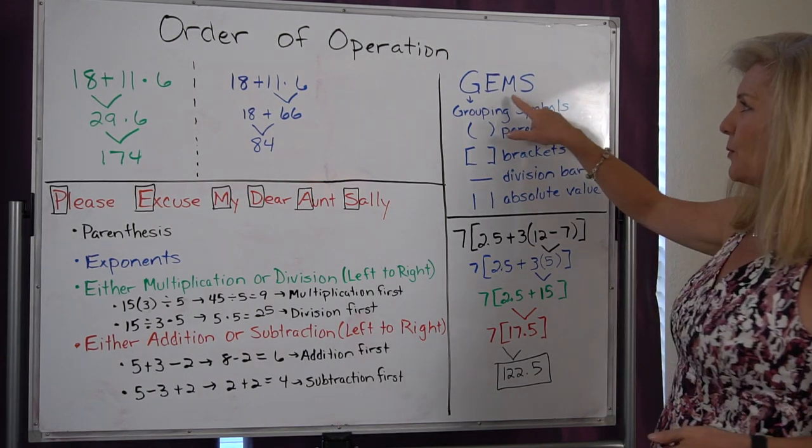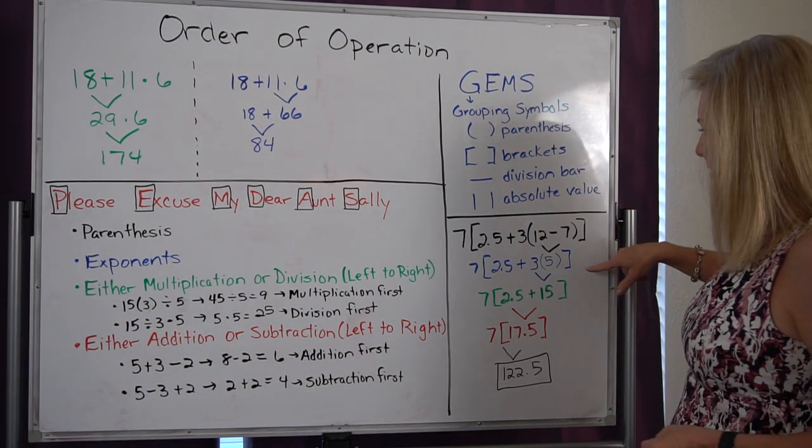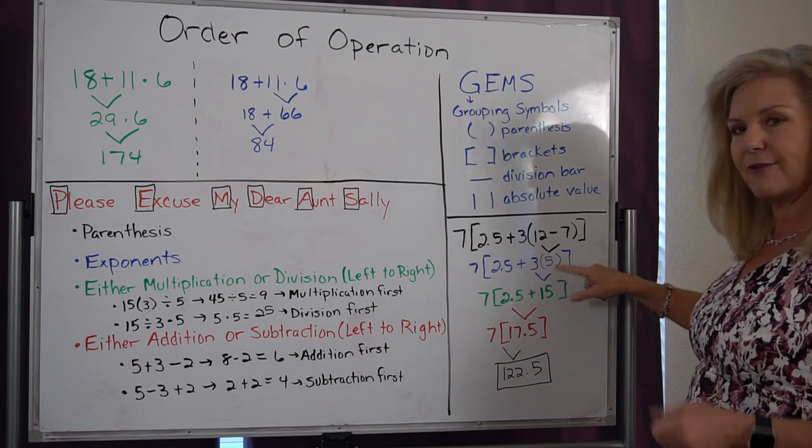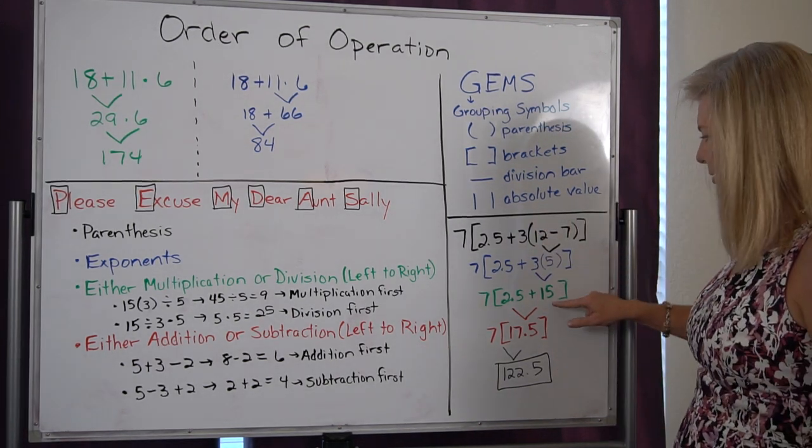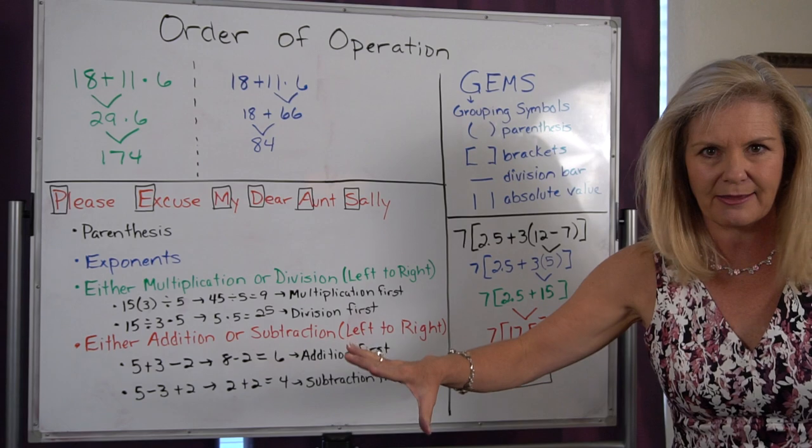What has to come first? Multiplication has to come first. So I'm going to do 3 times 5. I use my arrow to pull it down, which is 15. I keep everything else the same.